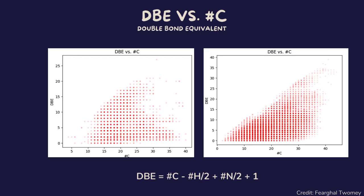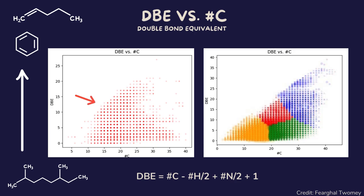DBE is zero for fully saturated hydrocarbons, such as alkanes, and increases as the molecule becomes more unsaturated, for example, alkenes or aromatics. A horizontal trend might suggest a series of molecules that are structurally similar but differ in chain length. Clusters of points on the plot can represent specific classes of compounds.